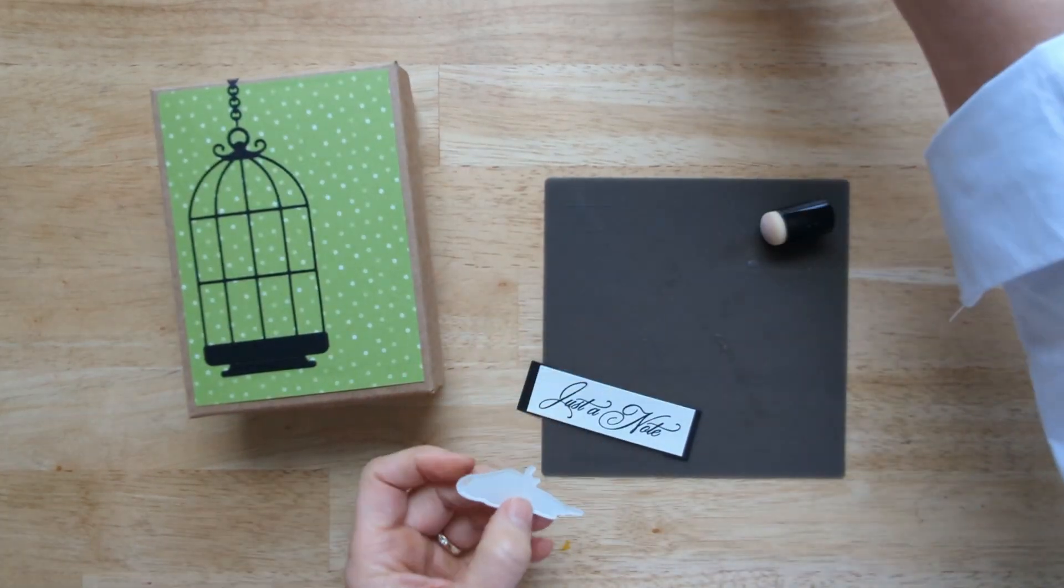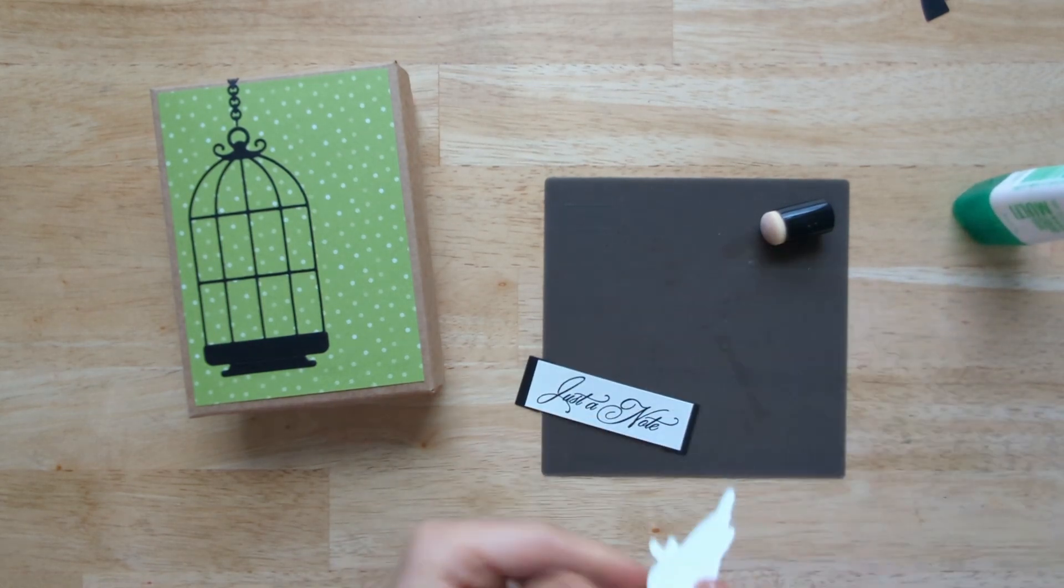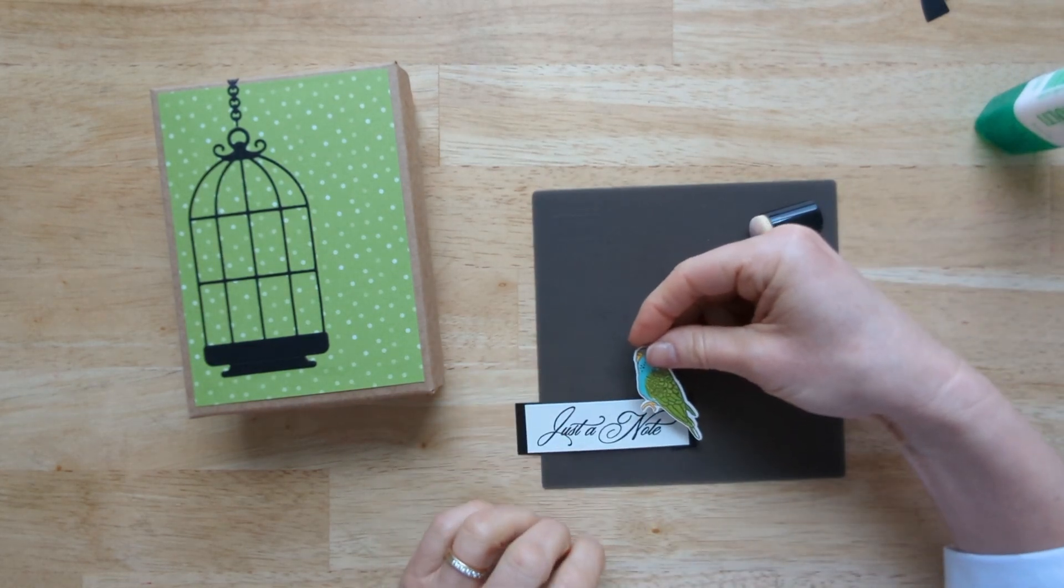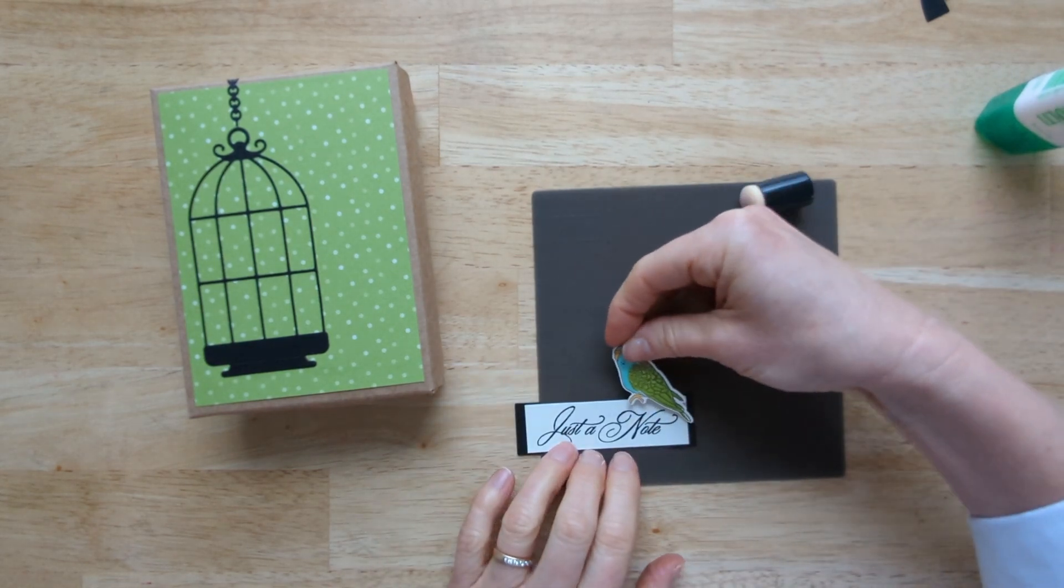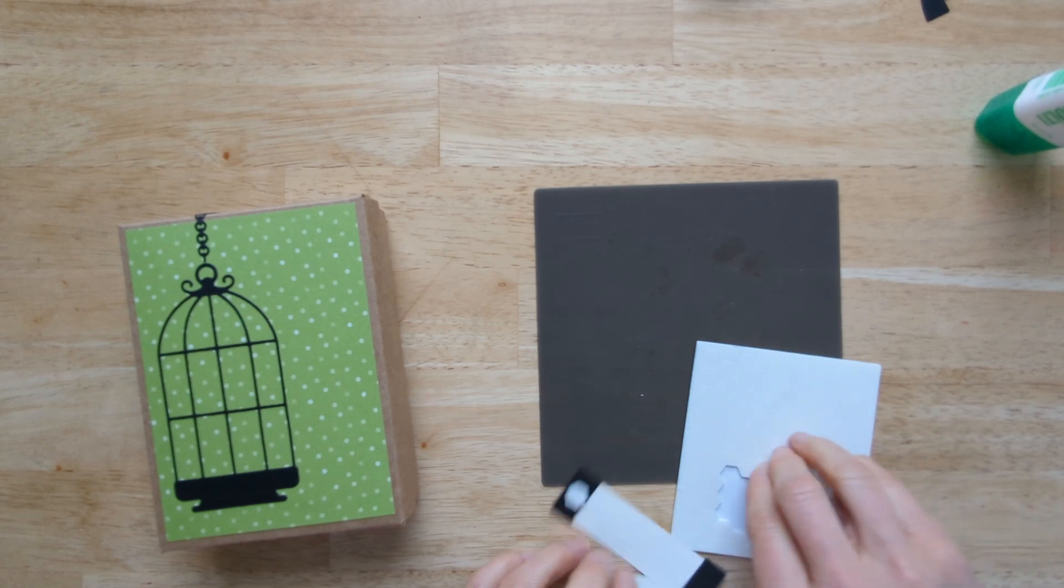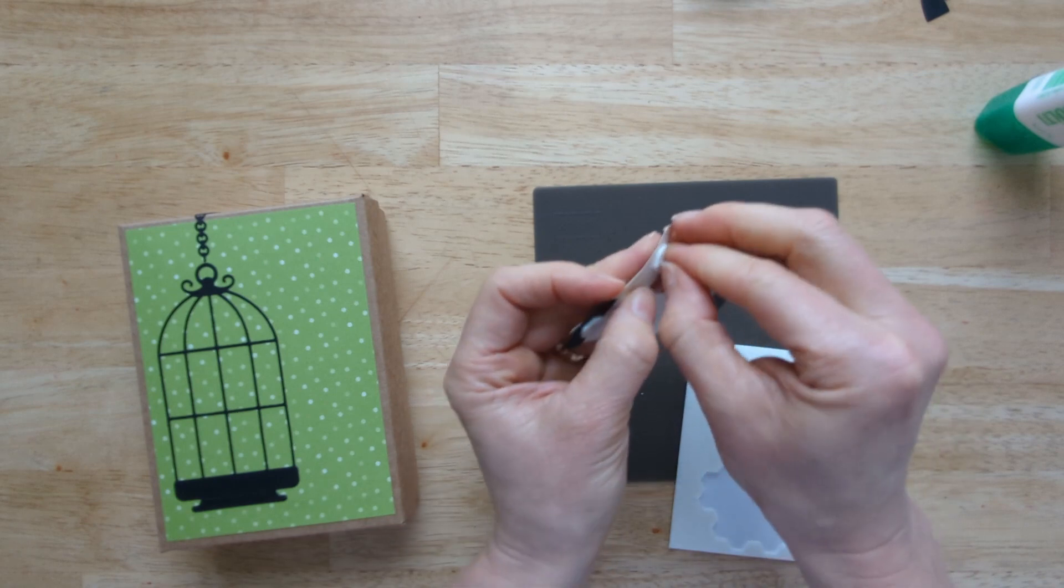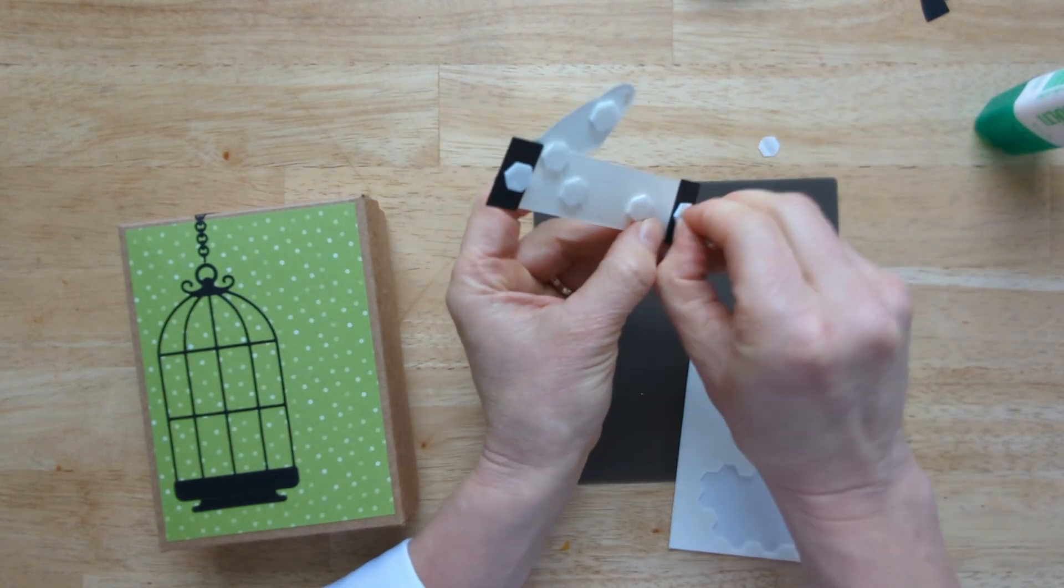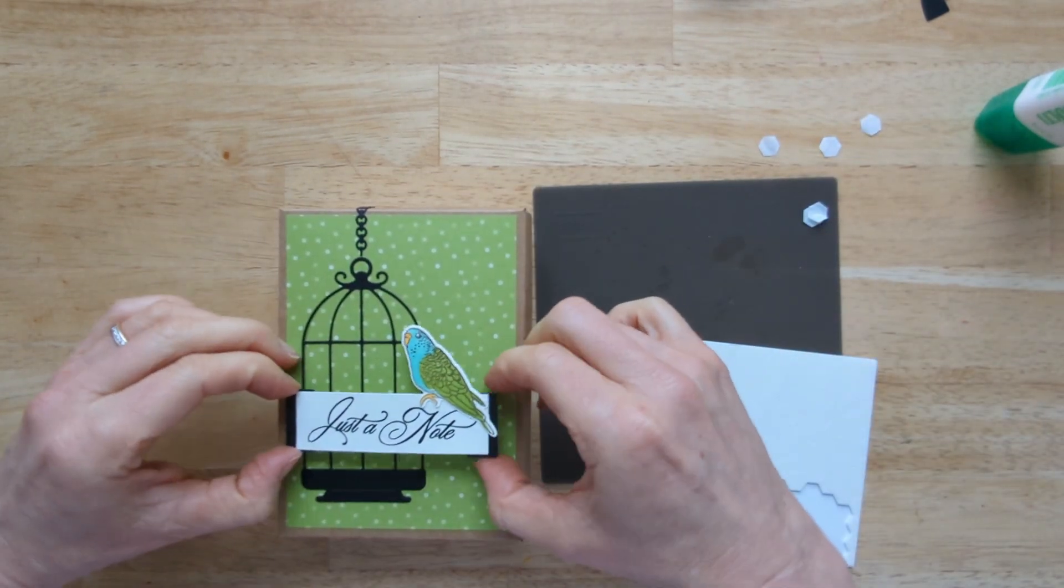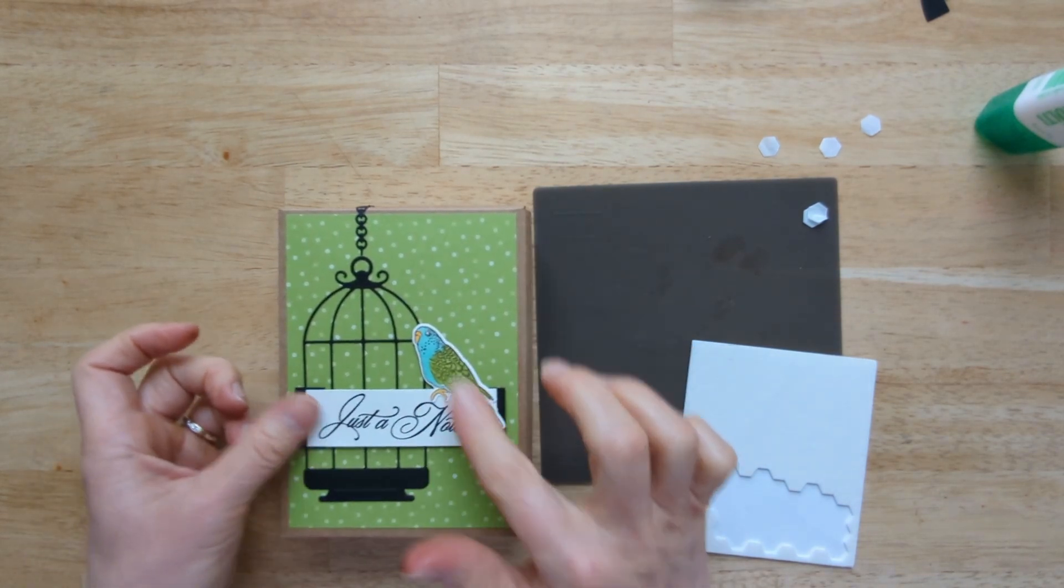Now we're going to glue our bird on here. Just going to put a little bit on his feet. We'll put some on his tail that'll also touch. We're just going to have him sitting right on top of that. Now we'll put some Stampin' Dimensionals on the back of this. I'm going to put maybe more than I normally would because they're going to be opening and closing that box. So the placement of this is going to differ depending on how big your sentiment is.